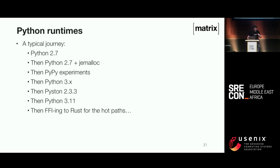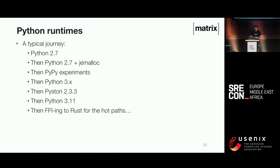In terms of Python runtimes, it's a pretty typical journey for anybody who's run Python at scale. Started with Python 2.7, added jemalloc — that helped a lot. Played with PyPy — didn't help much for our workload. Shifted to Python 3, had to rewrite everything to get Twisted to support it. Tried Piston for a couple of years, which worked really well until Python 3.11 came along and improved things massively. Right now we're using vanilla Python 3.11, with the exception that we've started using more and more Rust to FFI the hot paths over.